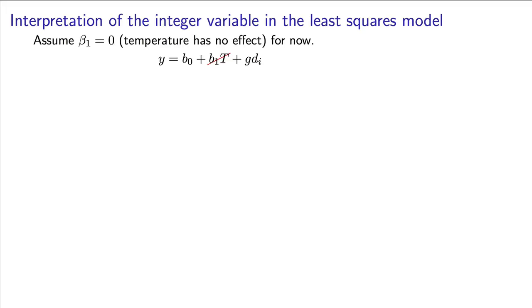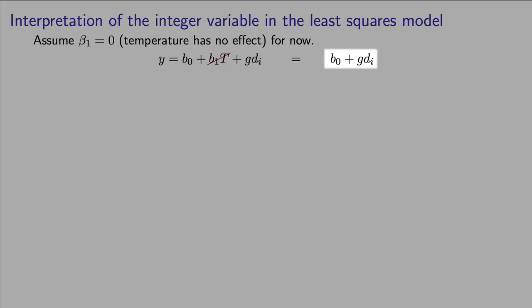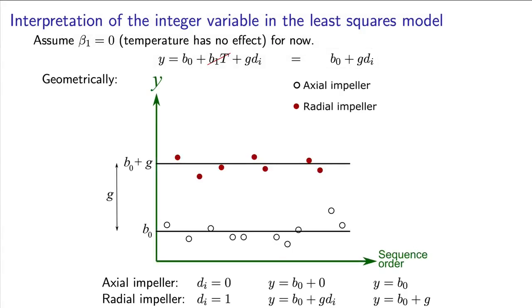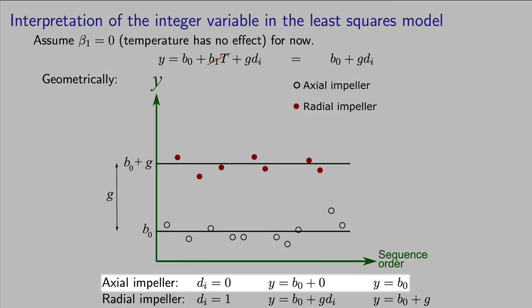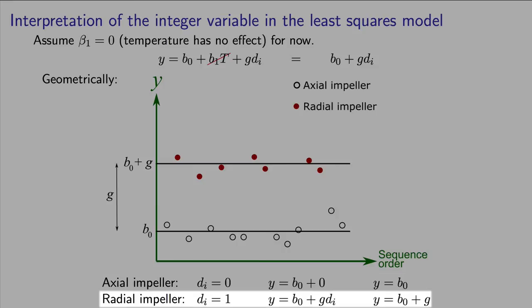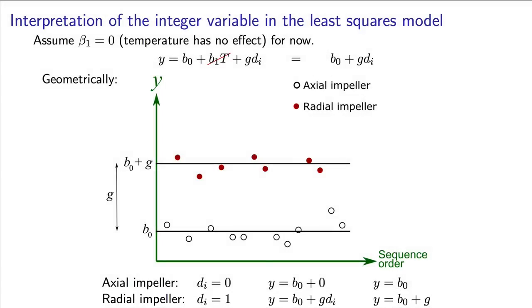To do that, I'm going to temporarily assume that temperature has no effect, so we can simplify our geometric interpretation. So now y is equal to an intercept, plus g times d_i. For the case of axial impellers, when d_i is equal to zero, our output from this model is simply that y is equal to b0, the intercept. For the case of radial impellers, where d_i is equal to one, our output from the model is equal to y is equal to an intercept plus g. There's a certain distance, g, between the intercept b0 and this other line, b0 plus g. As long as g is non-zero, it indicates to us the effect of changing from the axial impeller to the radial impeller. We have to be clear on that interpretation. It is the incremental effect of going from the axial impeller to the radial impeller.